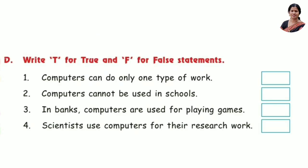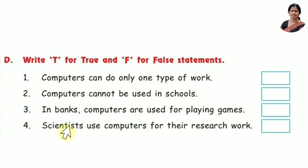Write T for true and F for false statements. Number 1: Computers can do only one type of work. False. Number 2: Computers cannot be used in schools. False. Number 3: In banks, computers are used for playing games. False. Number 4: Scientists use computers for their research work. True.